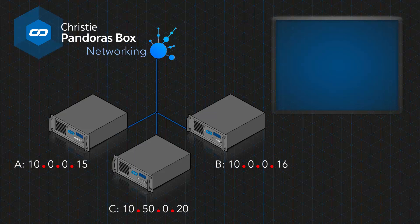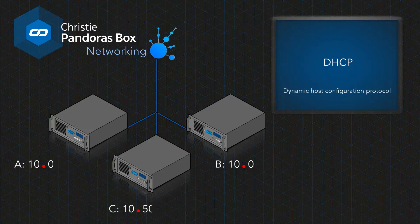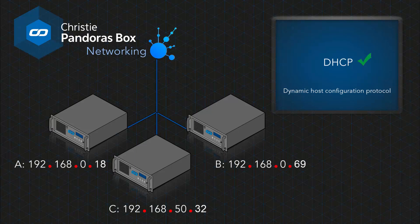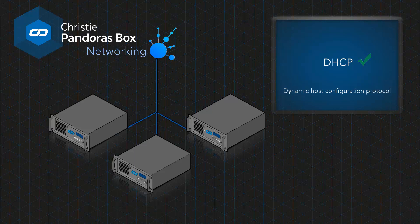When working with many machines, it can be useful to auto-assign IP addresses. Most routers offer a service called DHCP — Dynamic Host Configuration Protocol — and it does exactly that. While it is possible to use it, we discourage it because computers can change their addresses over time. Pandora's Box relies on the IP address being persistent for operation, so you should statically configure all addresses yourself.